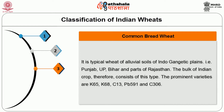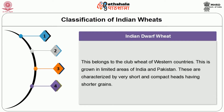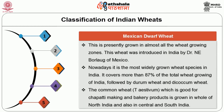Common bread wheat is the typical wheat of alluvial soils of Indo-Gangetic plains, that is Punjab, Uttar Pradesh, Bihar and few parts of Rajasthan. The bulk of Indian crop therefore consists of this type. Indian dwarf wheat belongs to the club wheat of western countries. This is grown in limited areas of India and Pakistan and is characterized by very short and compact heads having shorter grains.